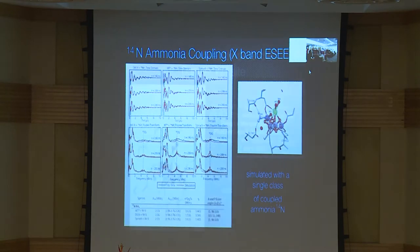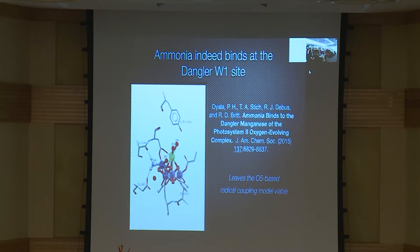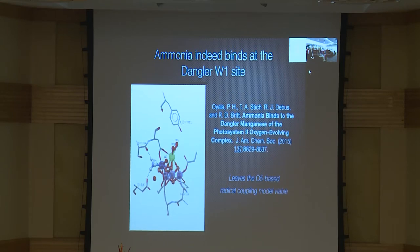That led us to agree with the Mülheim group — Wolfgang's group — that it's the W1 site at the S2 state where ammonia binds; it's not bound at all at S1. This leaves the O5 substrate argument viable, as Pair would certainly tell us — he always knew. And it doesn't really knock out the other model because W2 is still there, so it leaves the radical coupling model viable.